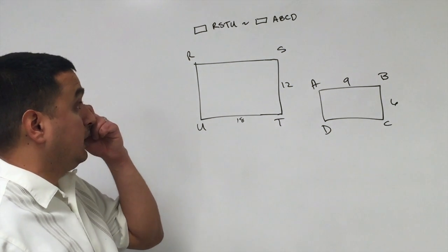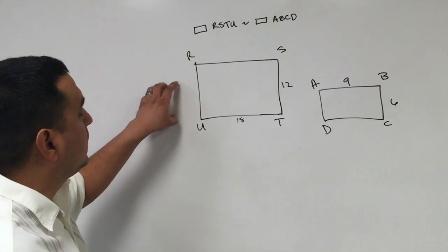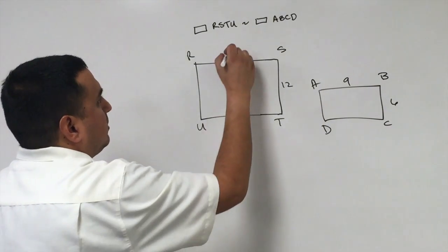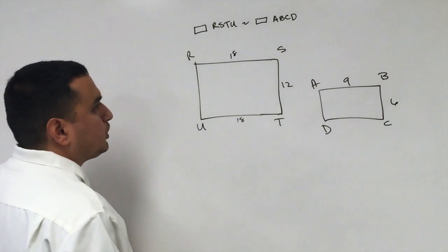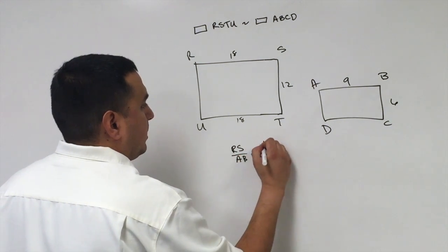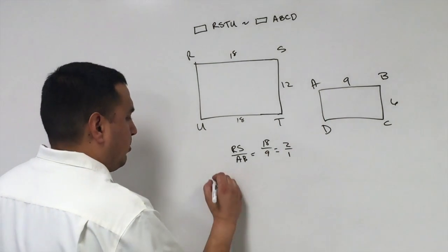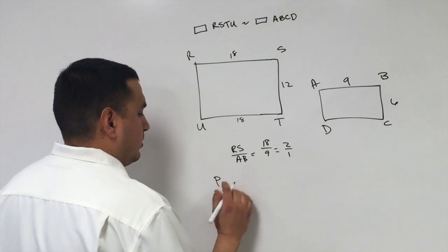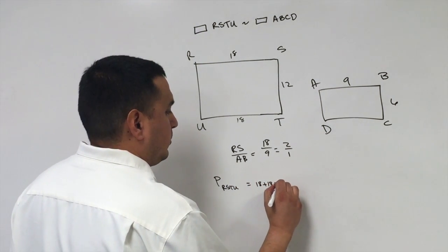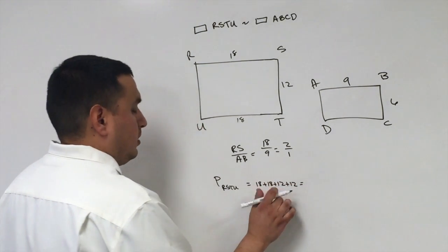Now we're going to look at the perimeter of these polygons and see if there are any conclusions. Looking at the sides, this is 18, so RS is 18. The ratio RS to AB is 18 over 9, which is 2 to 1. The perimeter of RSTU is 18 plus 18 plus 12 plus 12, which equals 60.